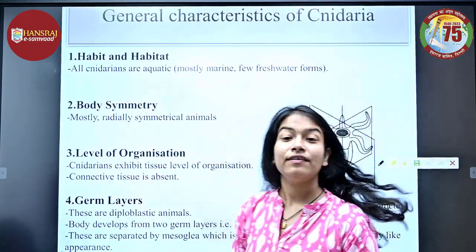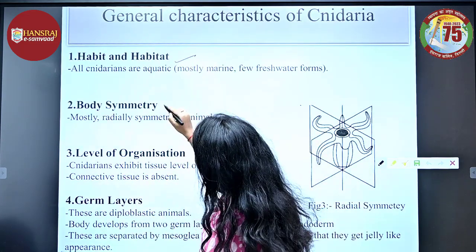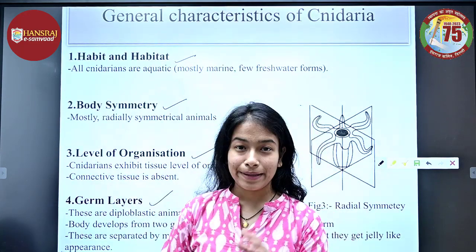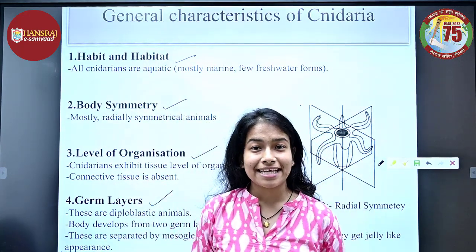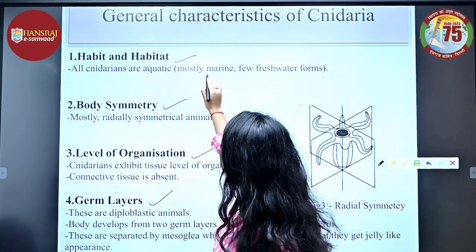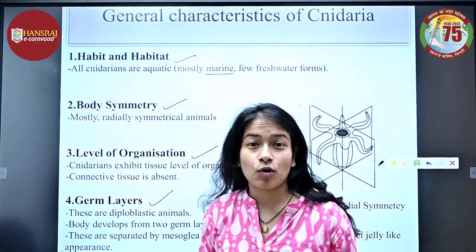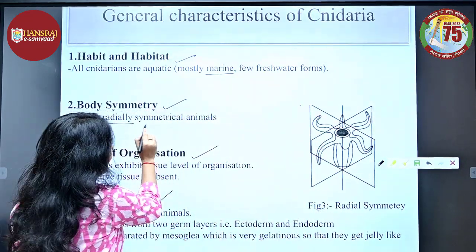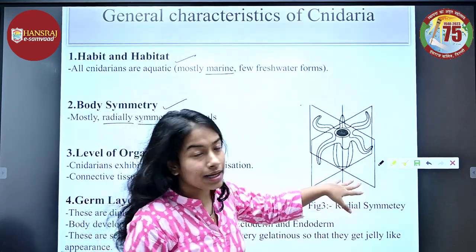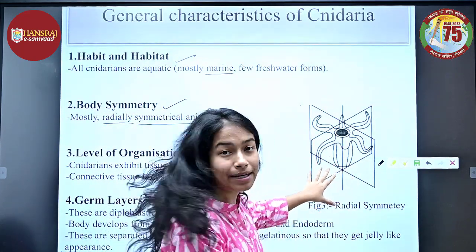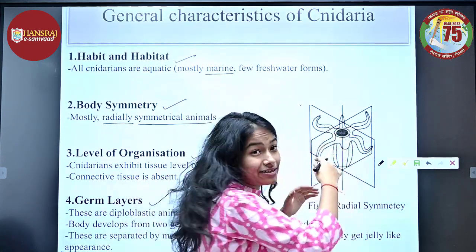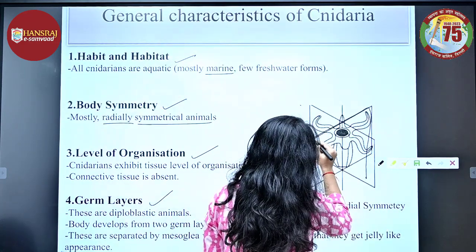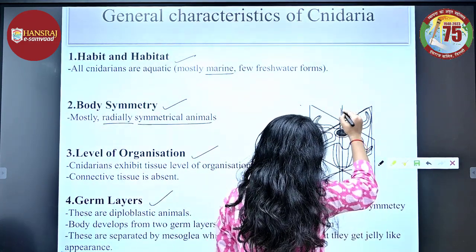Now we will discuss habit and habitat, body symmetry, level of organization, and germ layers. Beginning with habit and habitat: all cnidarians are aquatic in nature, mostly marine but with some freshwater forms as well. Talking about body symmetry, they are radially symmetrical animals. As shown here, the body is divided into equal halves by various vertical sections.